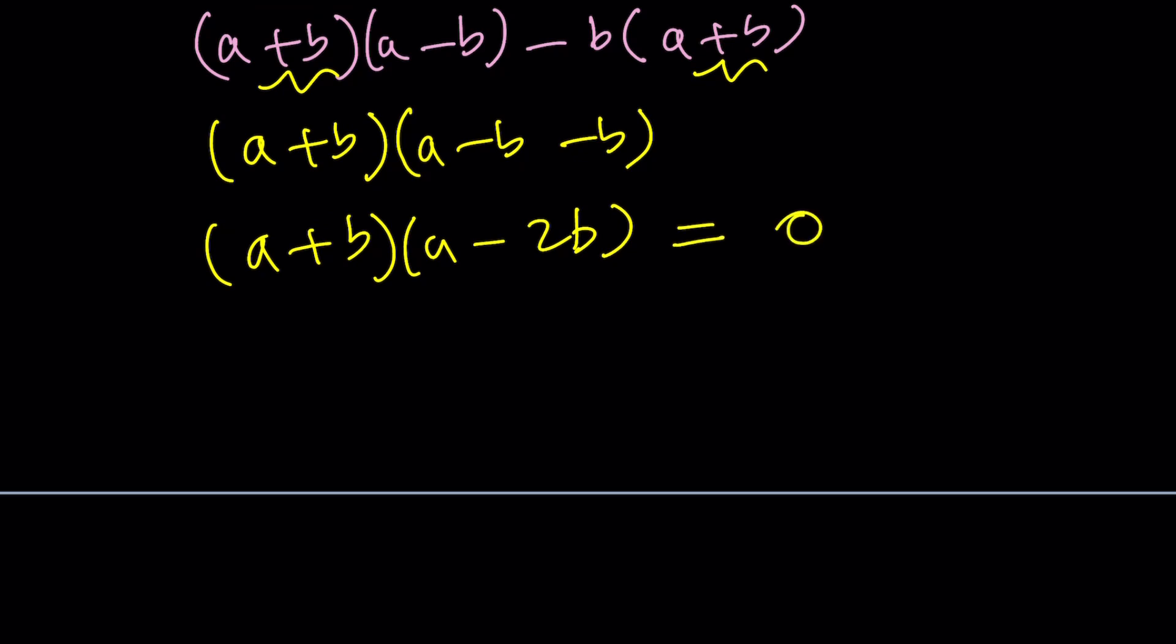Always remember what we're trying to find because that will help you keep it in perspective. We're trying to evaluate the ratio a plus b to a minus b. That implies it will be good to know what a over b or b over a is. We can find it from here, actually.